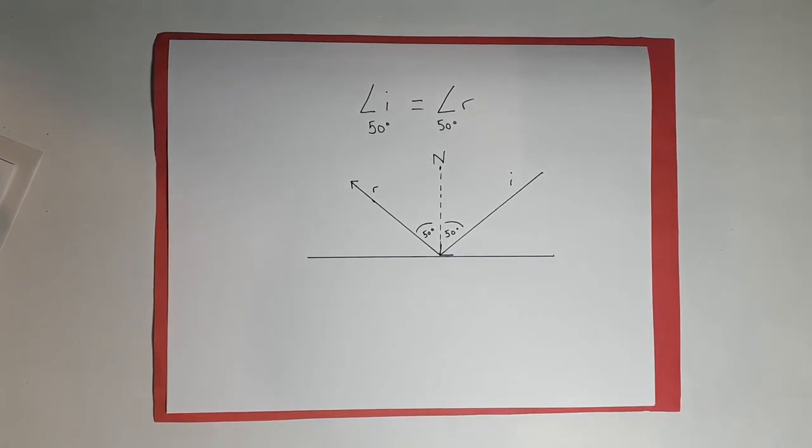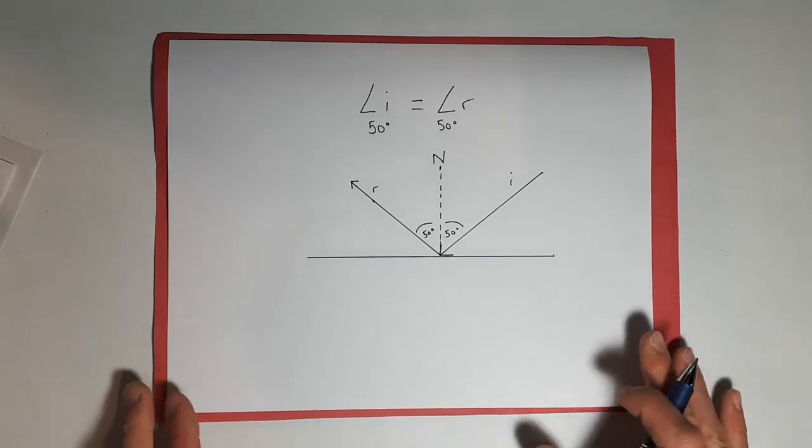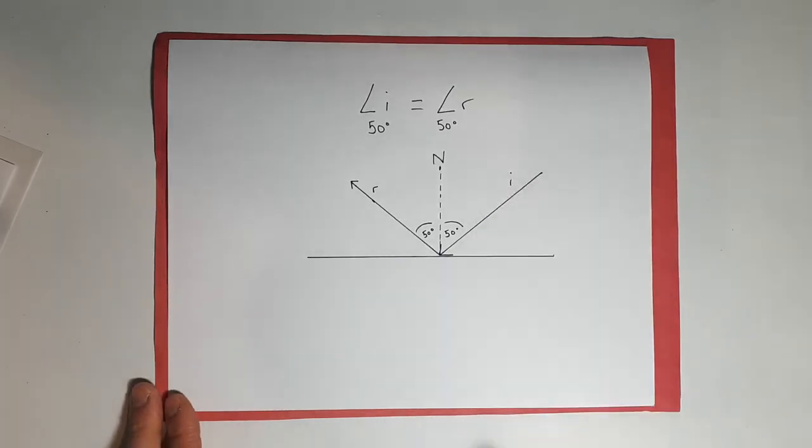So that's part one of this plane mirror tutorial. This is just the law of reflection. And you notice that the angle of incidence comes in and it goes out on the exact same angle.